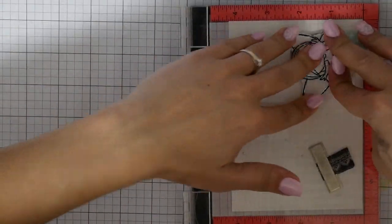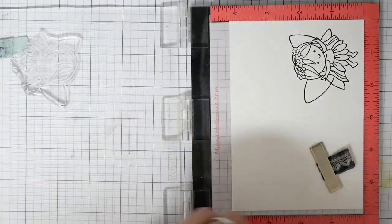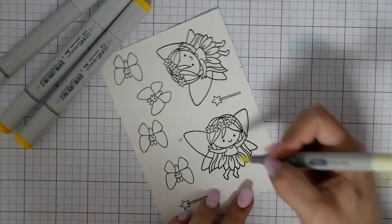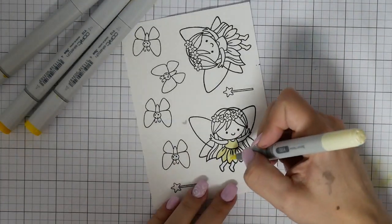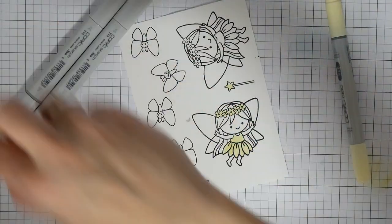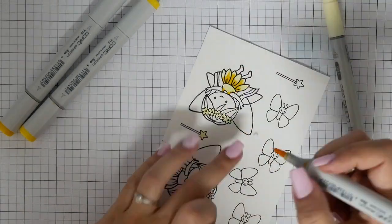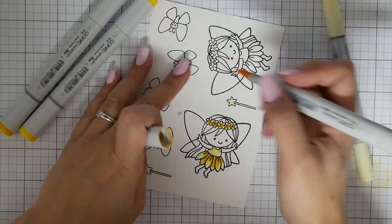I'm using here my Misti tool because the stamps are new and sometimes you need to stamp the images twice when they are new. I'm using Memento Tuxedo Black ink because I'm now Copic coloring my images.